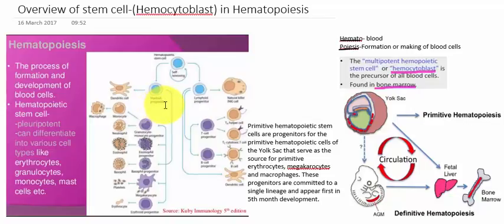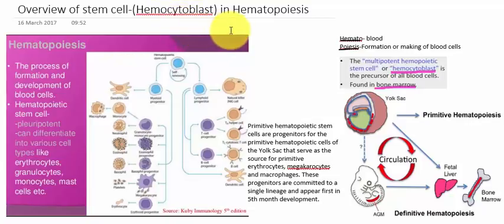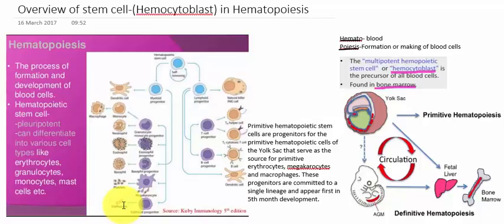The myeloid progenitor gives rise to the blood cells — the RBC, WBC, and platelets. The formation of red blood cells is called erythropoiesis, while the formation of all types of blood cells is called hematopoiesis. The myeloid progenitor gives rise to the erythroid progenitor, which forms the erythrocyte, that is the RBC.